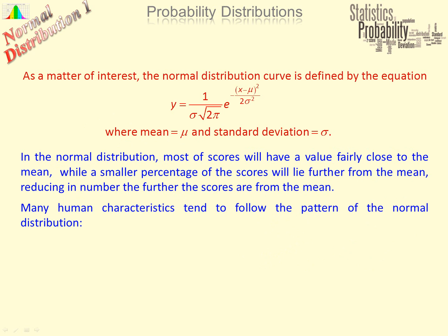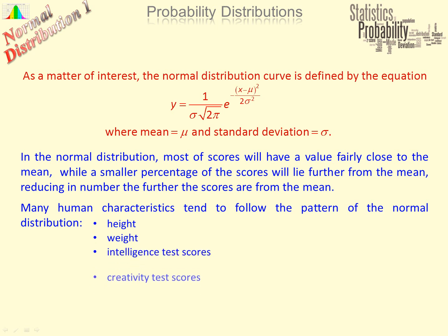Many human characteristics do tend to follow the pattern of the normal distribution, such as height, weight, intelligence, test scores, creativity scores, life span, and so on. Many different aspects in nature and measurements in industry, medicine, and all sorts also correspond to the normal distribution.